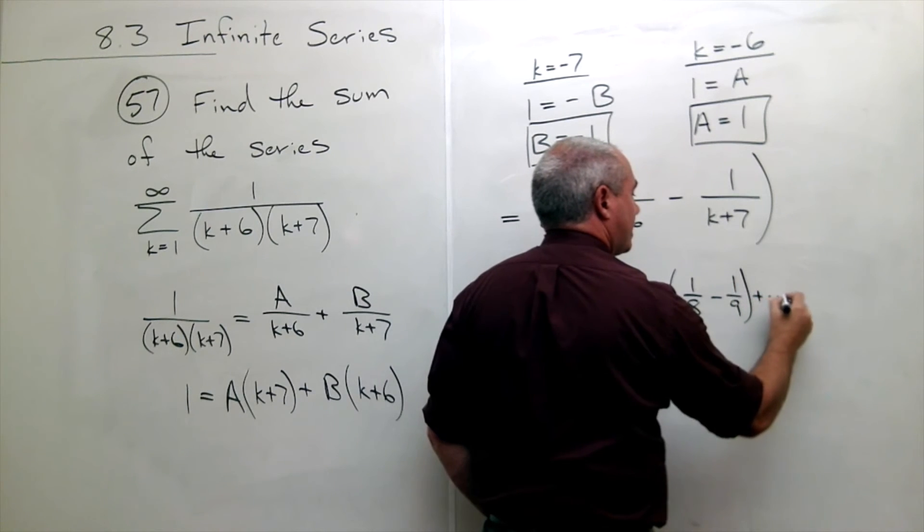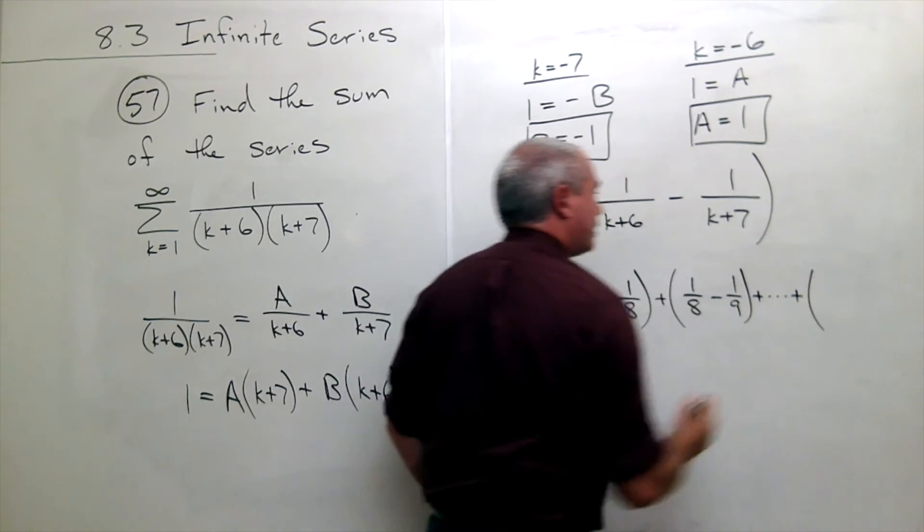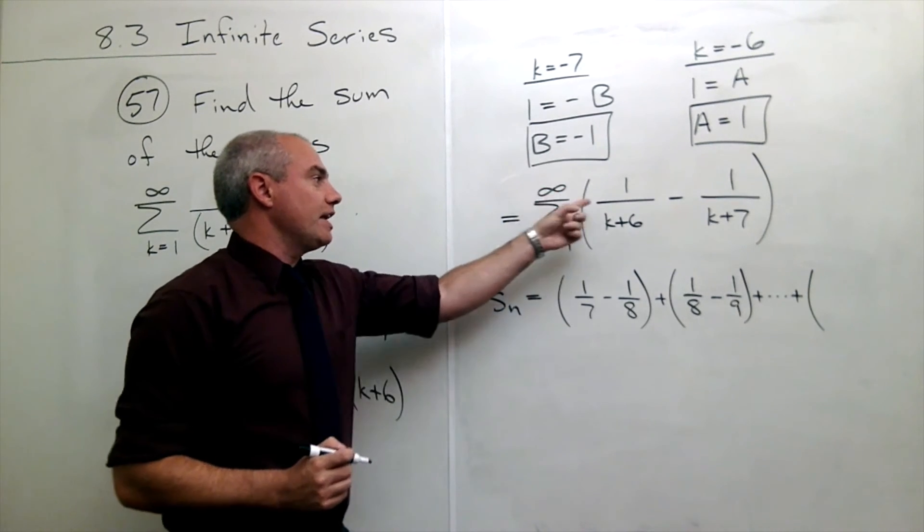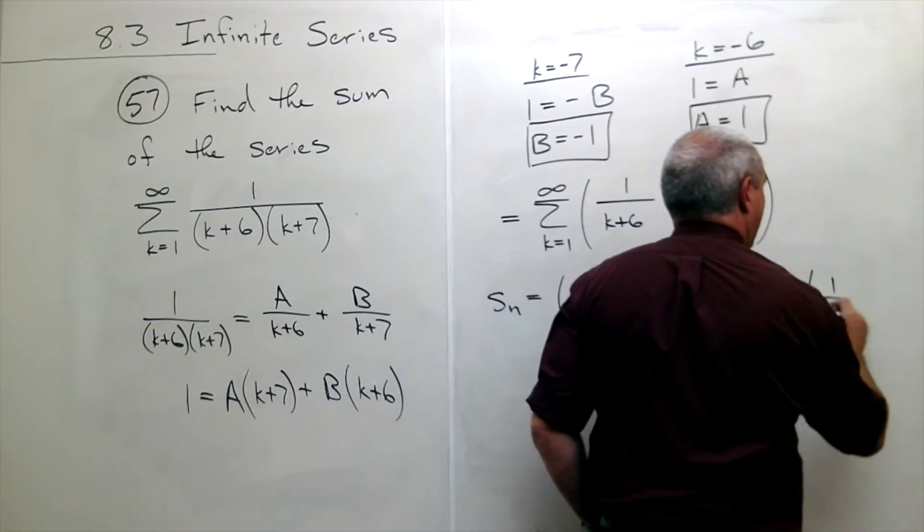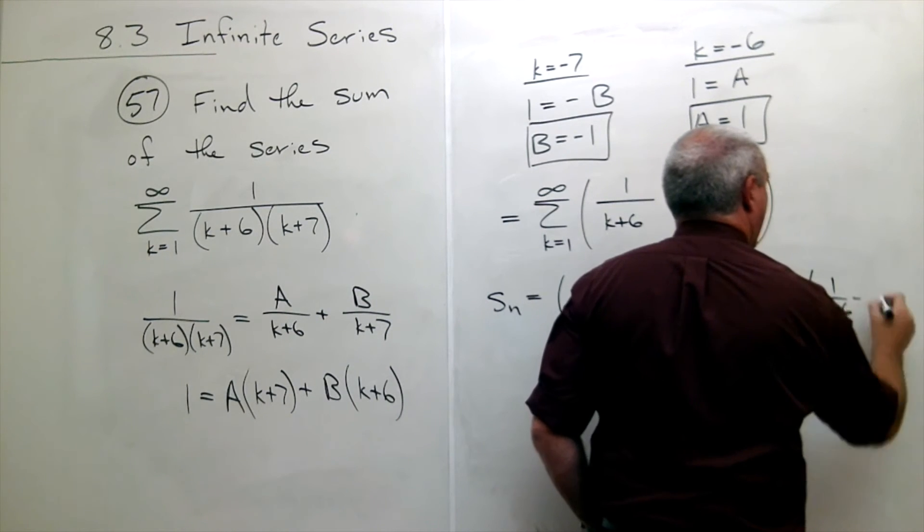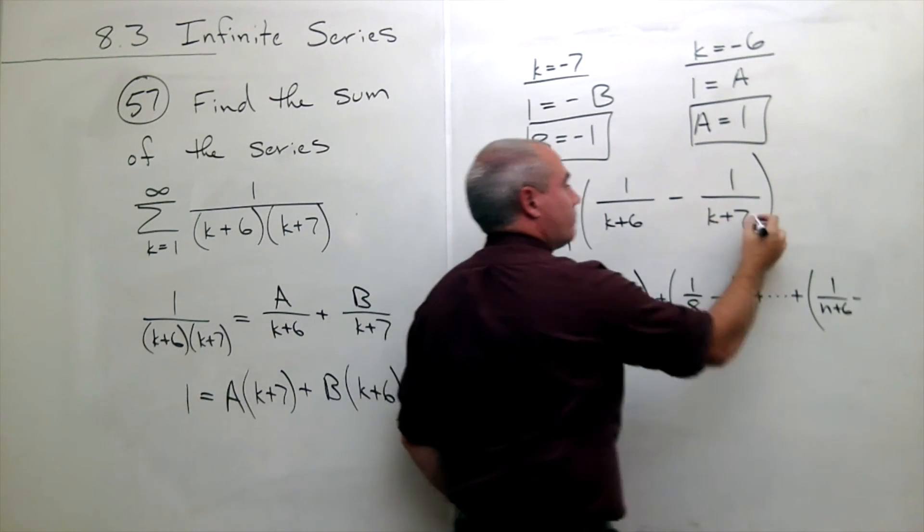Plus I can keep doing this until finally I get to the nth term. If I plug in n I get 1 over (n plus 6) minus 1 over (n plus 7).